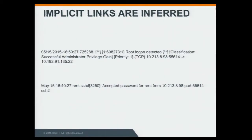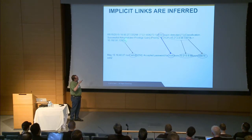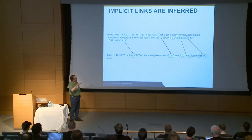Implicit links are links that you infer from the data. Here we have two different Unix syslog entries that may be related. You can see some implicit links: one refers to port 22 — and SSHD is the service that typically runs on port 22. You can also see a root logon detected here, and there it says password accepted for root. The IP addresses and ports match up, so using implicit linkage you can infer that these two pieces of data are related.